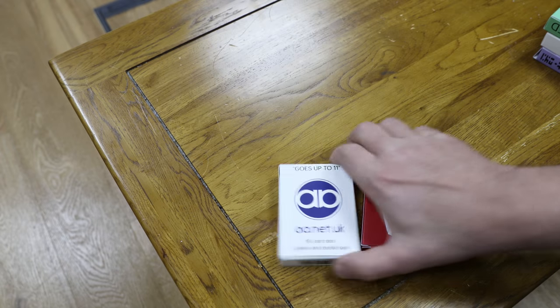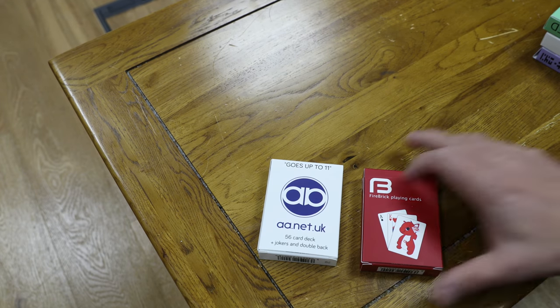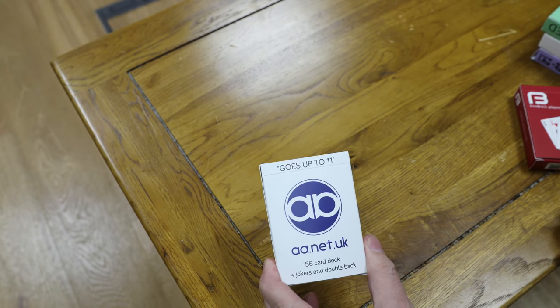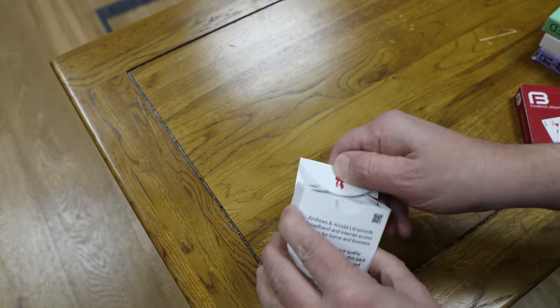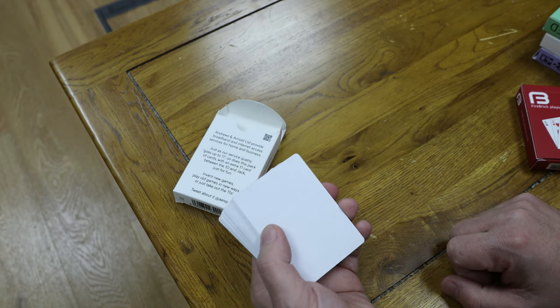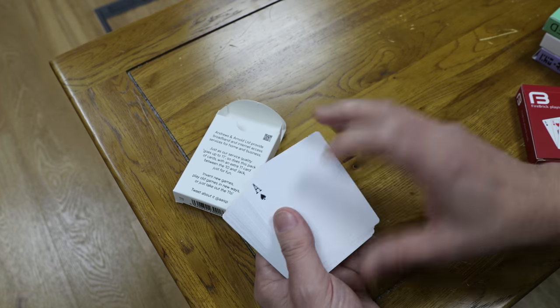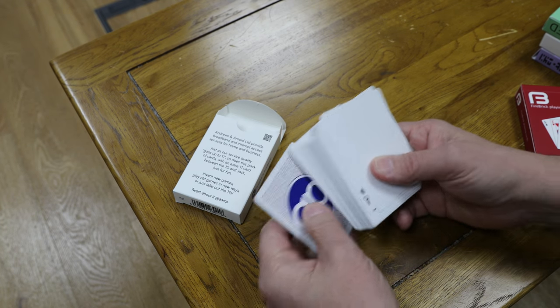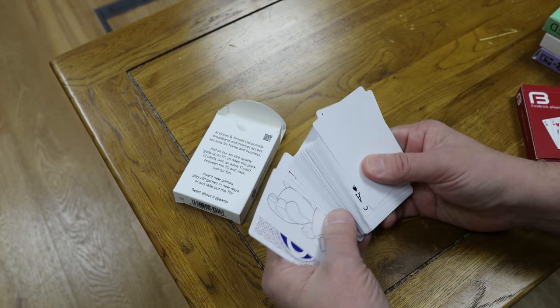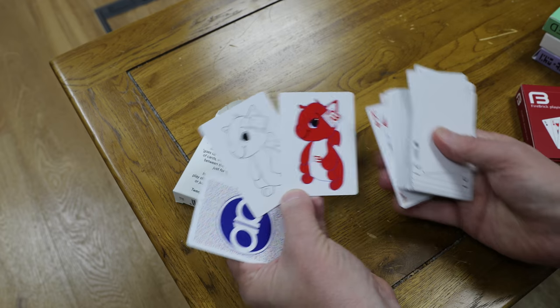The first two packs are the branded packs. We have first off the Andrews & Arnold branded pack. Now all of these cards are a little bit special in some way. First off, most of them have a blank card like this—blank on one side, normal back. They also have a double-backed card, which apparently is good for magic tricks, and they have some jokers. We've got these Ignis jokers here with the nice fabric dragons.